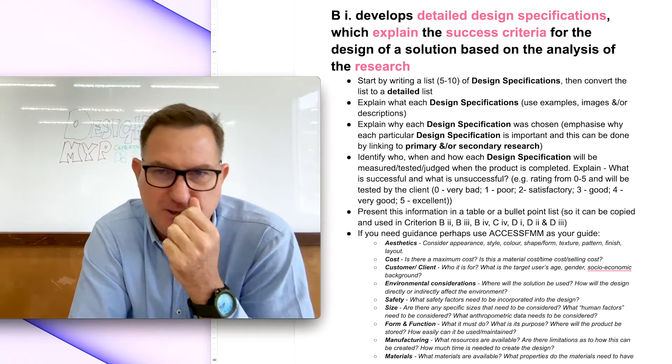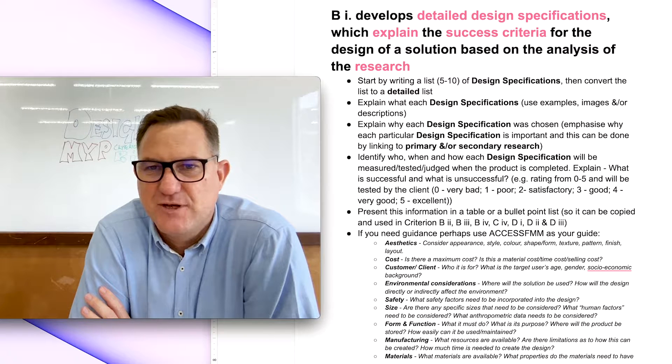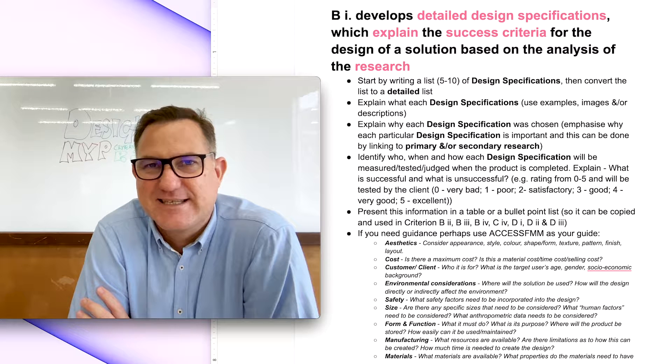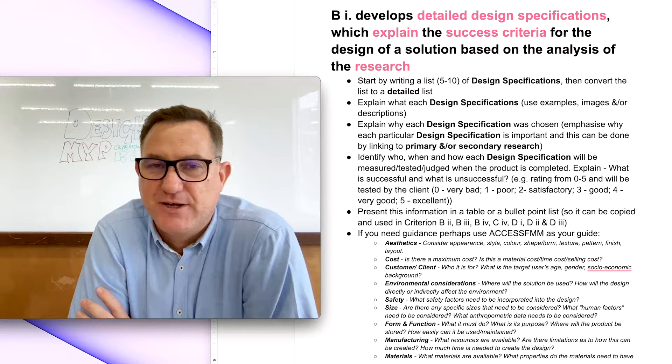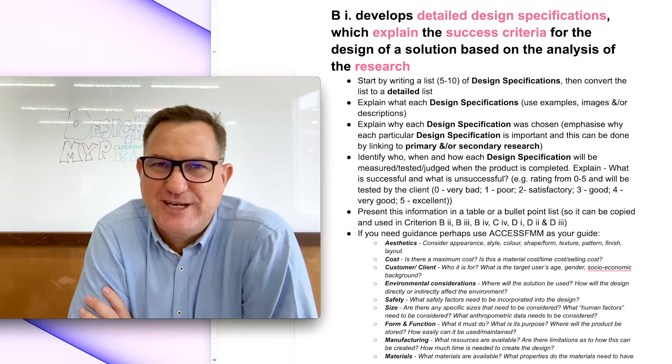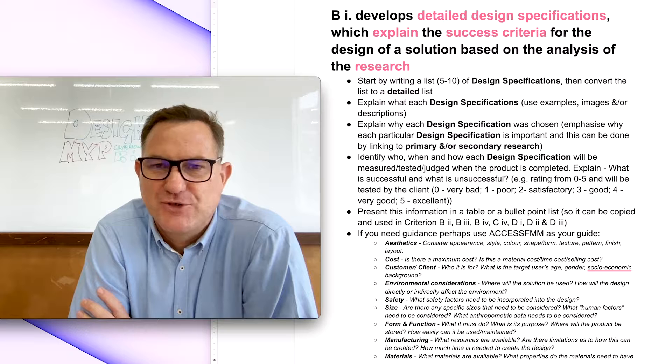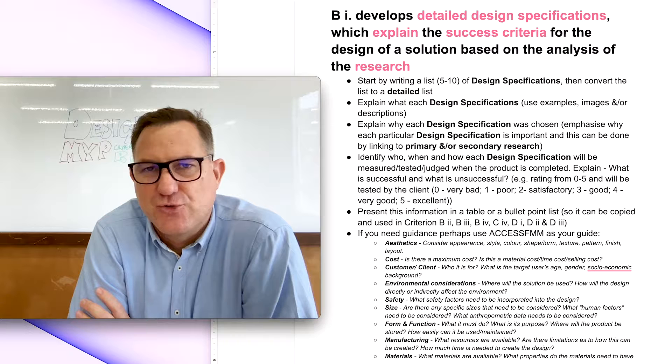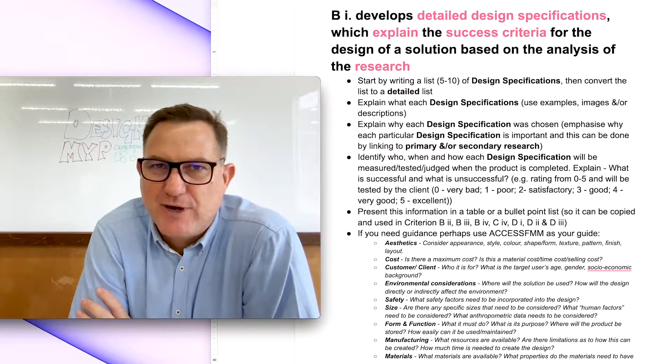So first of all let's look at the assessment criteria. It says here develops detailed design specifications. So one of the key words here is detailed. So you're not going to get top marks unless it's detailed. You also need to explain the success criteria. So how are you actually going to measure each design specification? You need to explain this. And also there should be some connection to research. So those are the words that I've highlighted and that I'll focus a little bit more on as I talk you through some of the points here about how you can get top marks for Criterion B Strand 1.